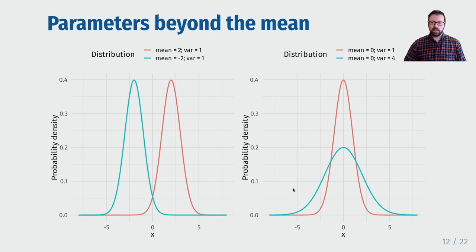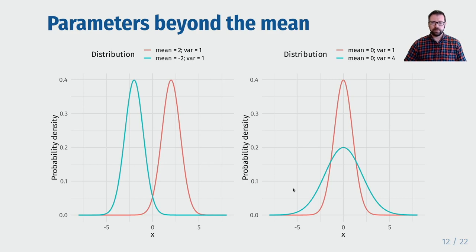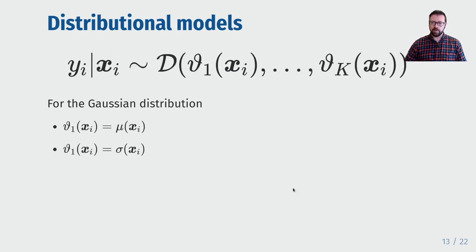To do this we'll need models for variance of a dataset. If we think of the Gaussian distribution, that distribution has two parameters: the mean and the variance. In linear regression we model the mean of the response at different values of the covariates and assume the variance is constant at a value that we estimate from the residuals. In the left-hand panel I'm showing how the Gaussian distribution changes as we alter the mean while keeping the variance fixed, while in the right panel I keep the mean fixed but vary the variance. The parameters of this distribution are independent. Instead of treating the variance as a nuisance parameter we could model both the variance and the mean as a function of the covariates. This is done using what is called a distributional model.